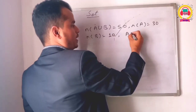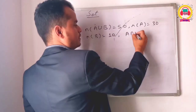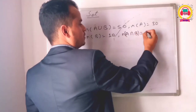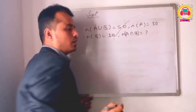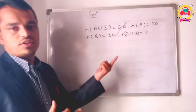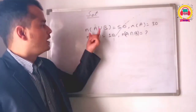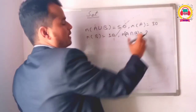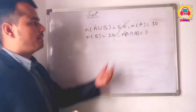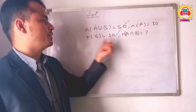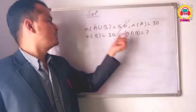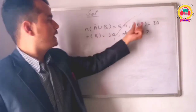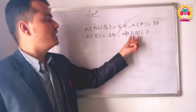Then find A intersection B. Number of A intersection B is equal to what? So if you have a union and an intersection B, you can find the intersection using the formula.